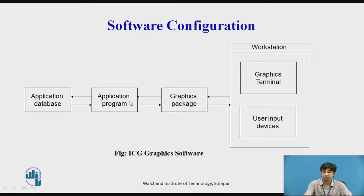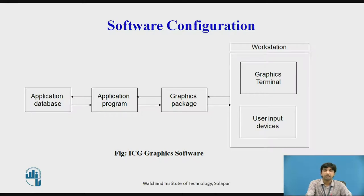The application program is the central module of ICG graphics software. It controls the software and retrieves data out of the application database. The application program is driven by the graphics package. It helps to develop a physical model from the image for the user, which will be displayed on the screen.